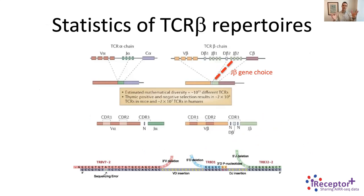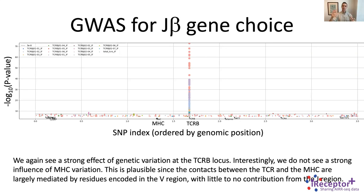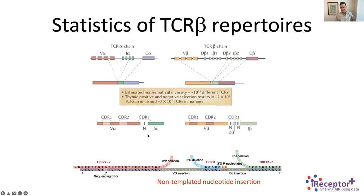For J gene choice, the Manhattan plot shows no peak at the MHC locus. This is compatible with what we saw in the TCR structure: most contacts between the MHC and the TCR go through the V gene, so it's reasonable that we don't see a strong MHC association with J gene usage.